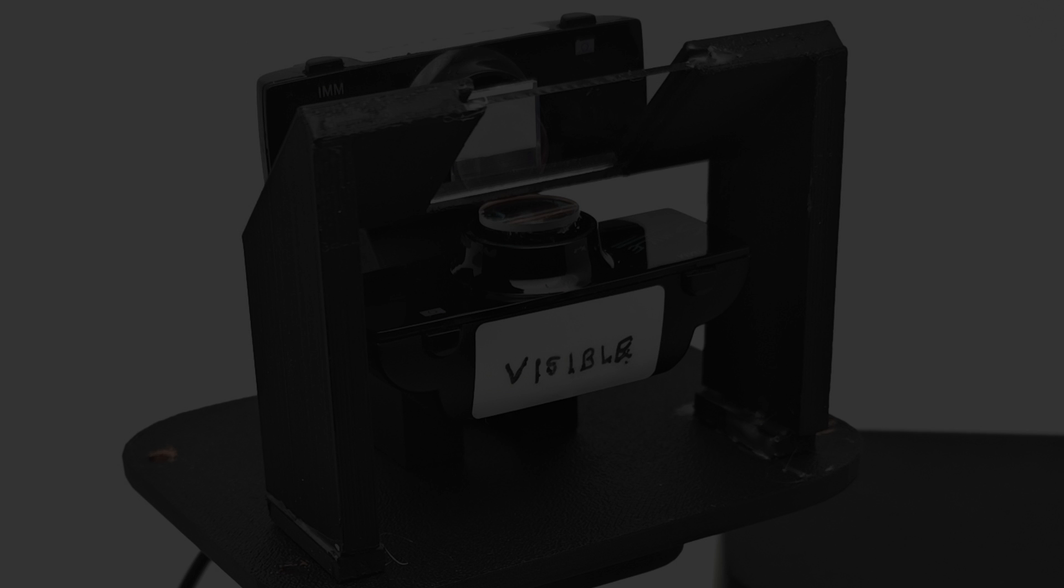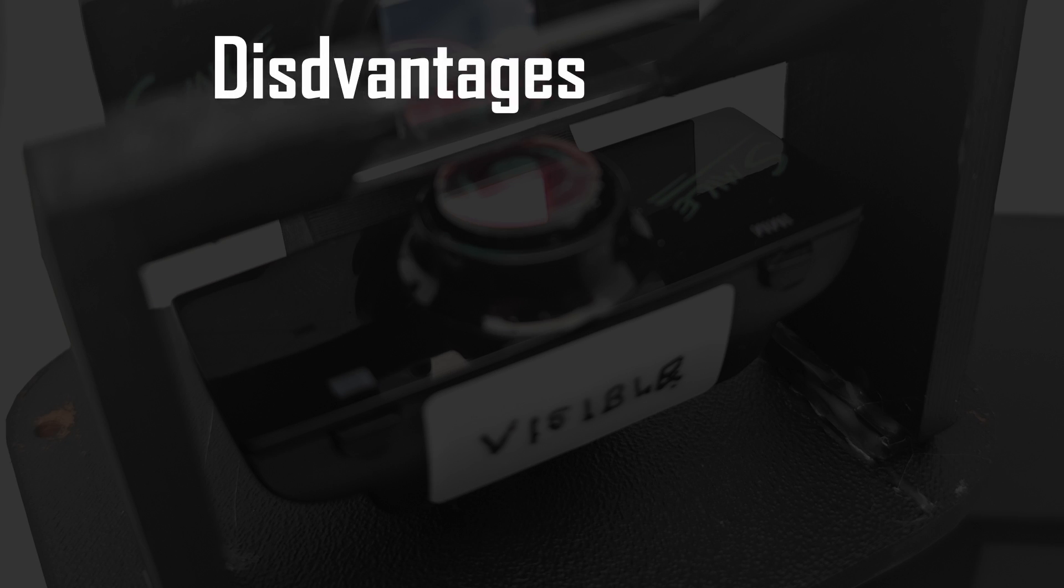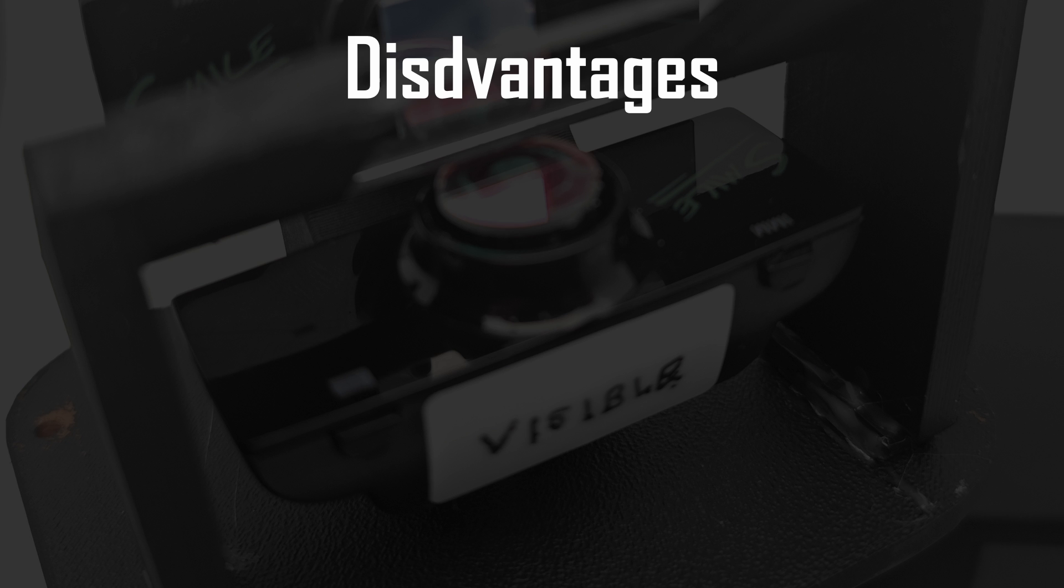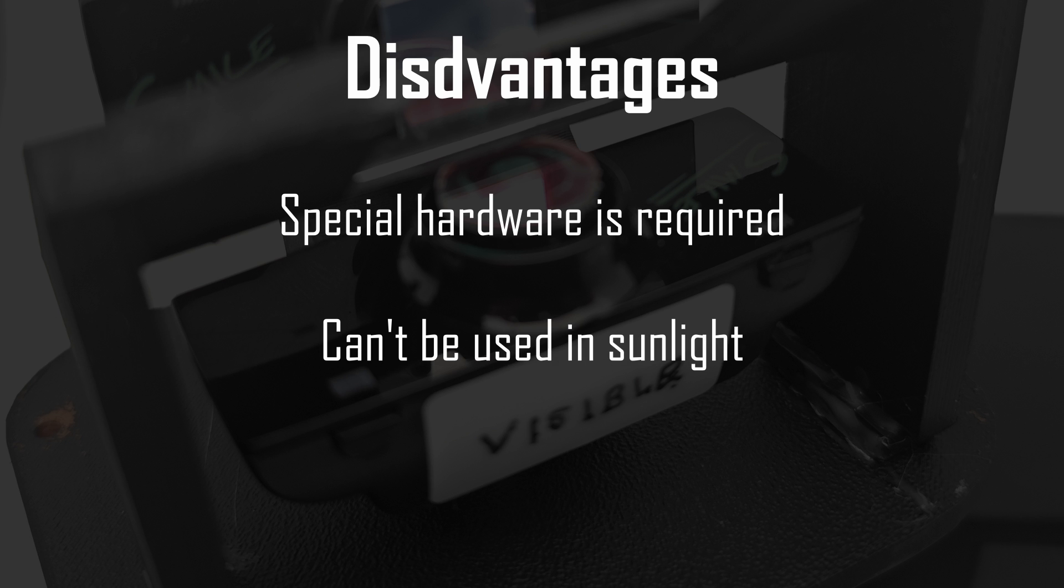But for every advantage, there is a disadvantage too. Clearly, the expense of needing a special camera would limit the adoption of this system. Infrared chroma keying is also going to be very sensitive to sunlight, which will limit the number of situations it can be used in. And finally, there is a requirement for special infrared lighting sources. These aren't so common, and so filmmakers might have to resort to custom built lighting rigs.